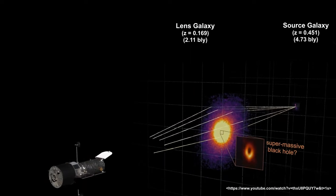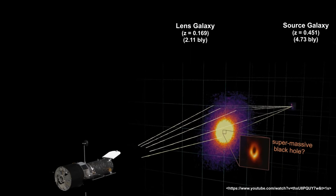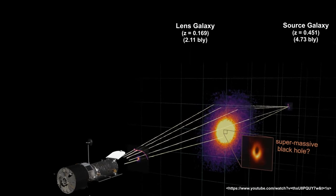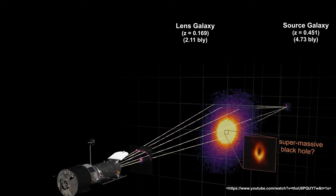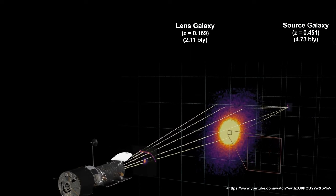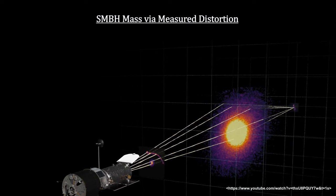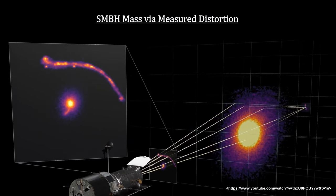The light passes within 3,000 light years of the supermassive black hole at the center of this lensing galaxy. We can't see the black hole, but we can see the distortions it creates.